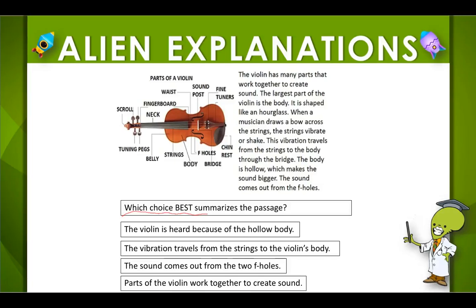Which choice best summarizes the passage? A summary retells the main ideas of the passage in a shorter way. So the passage begins with how the violin has many parts that work together to create a sound, and then it goes on in detail about what the different parts do.